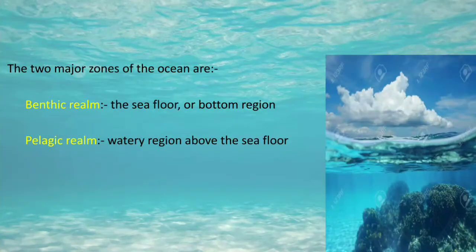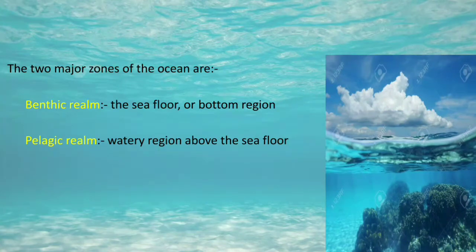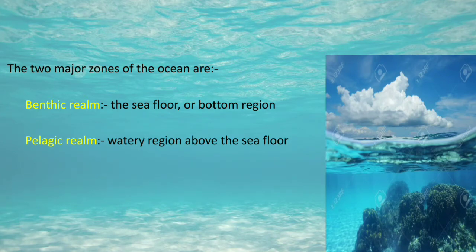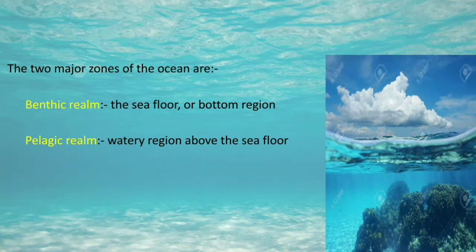Two major zones of the ocean are the benthic realm and the pelagic realm. The benthic realm refers to the sea floor and the bottom region. The pelagic realm is the water region above the sea floor. As we can see in the diagram, the sea floor below is the benthic realm, and the water above is our pelagic realm.